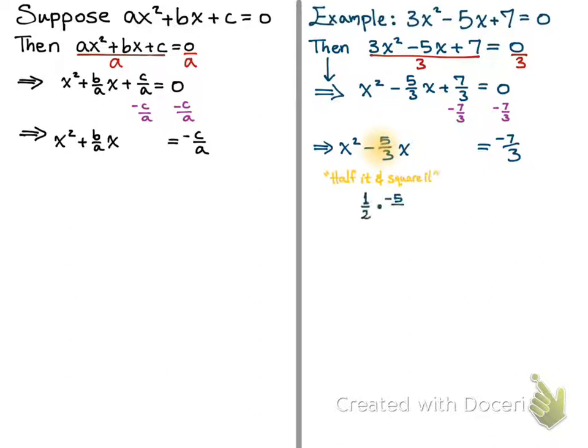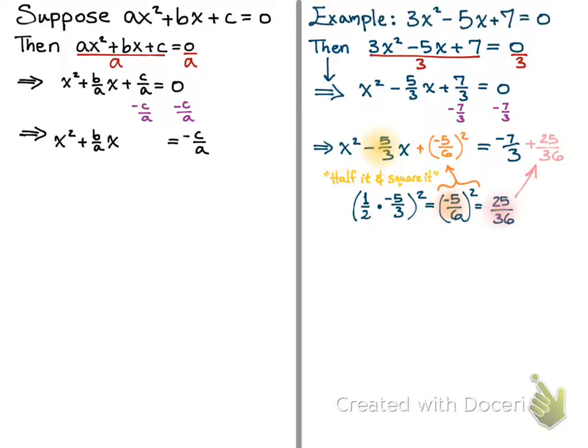Now, the coefficient in front of x is our magic number. We take that number — in this case minus 5 thirds — and we half it and square it, which is the same as multiplying by one half and raising it to the power of 2. When we do that, we get (negative 5 sixths) squared, or 25 over 36. We add that value to both sides, writing it in factored form on the left and expanded form on the right, as it will serve our purposes later.